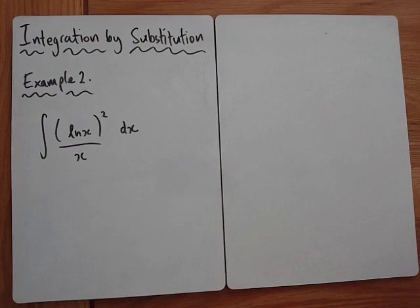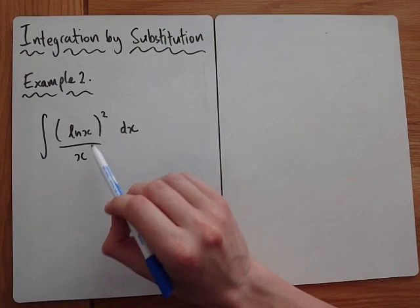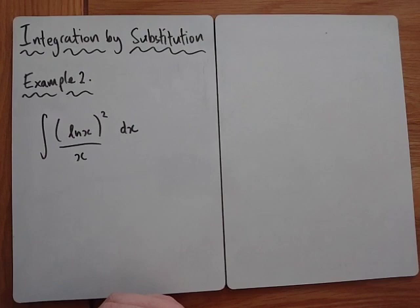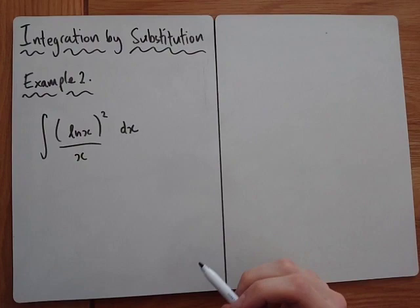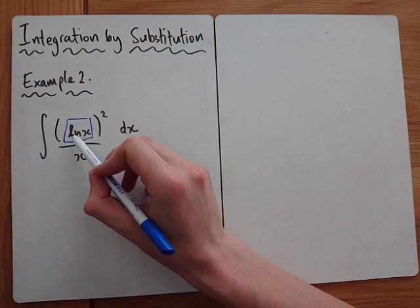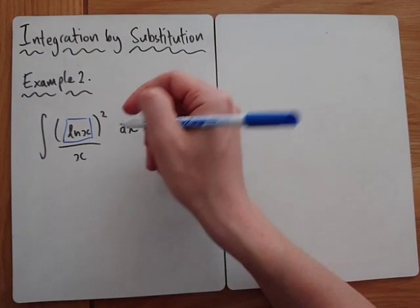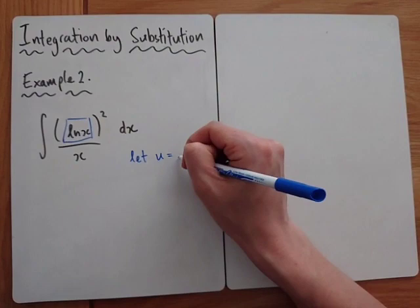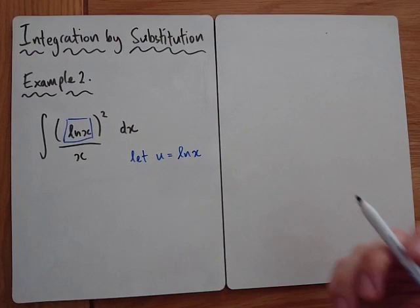Example 2 is the integral of (ln x) squared divided by x, with respect to x. I'm not giving you the substitution straight away — try to figure it out yourself. What stands out is a function inside another function that is not linear. So let's see what happens if we let u equal ln x. First step: differentiate.